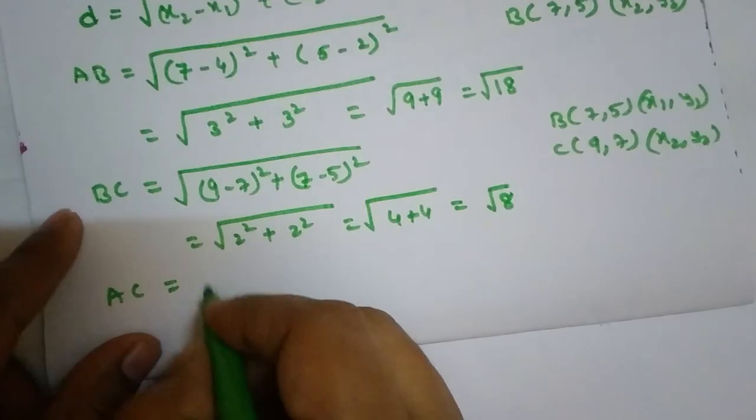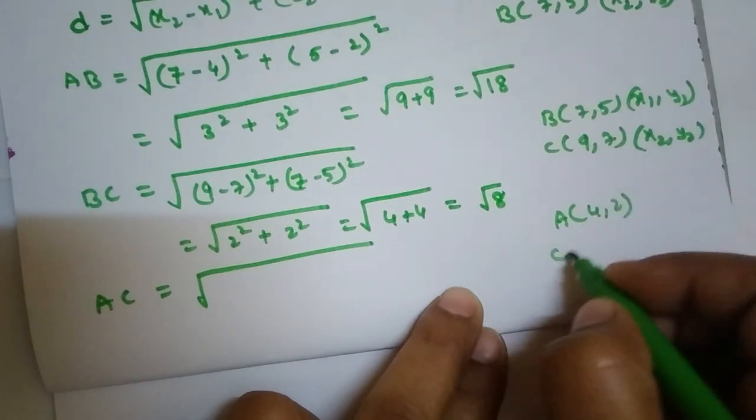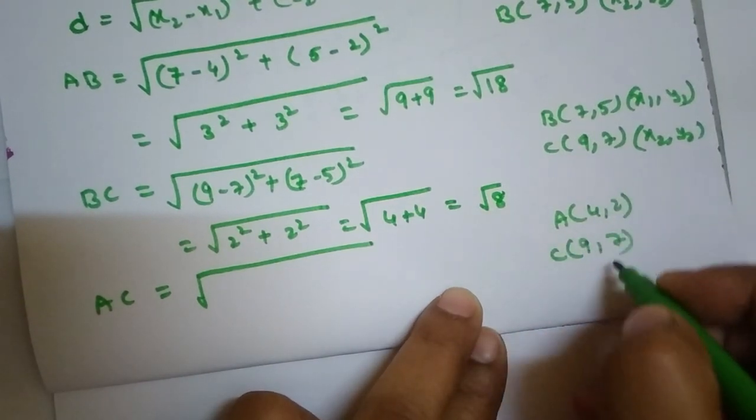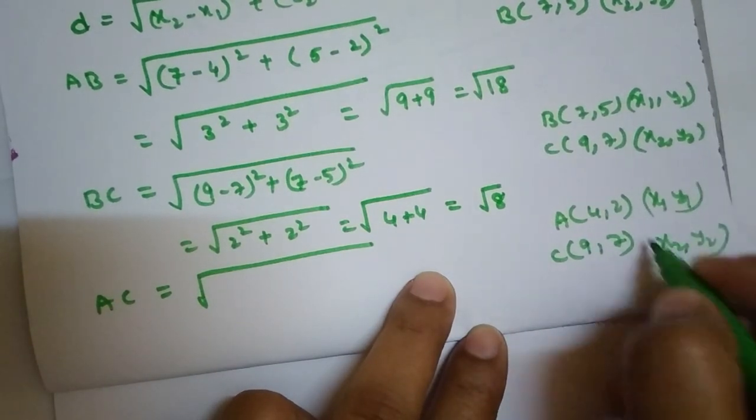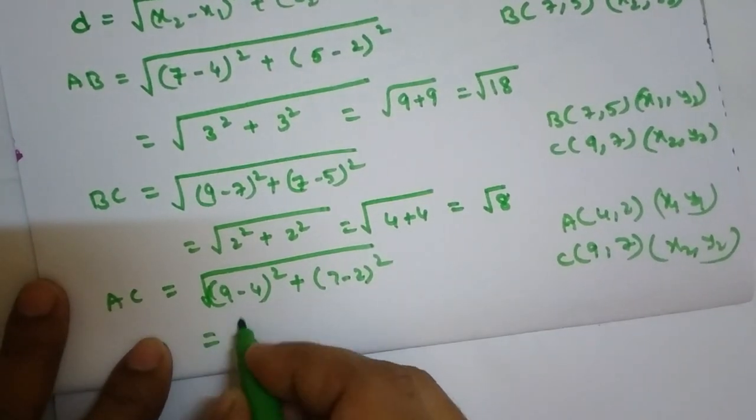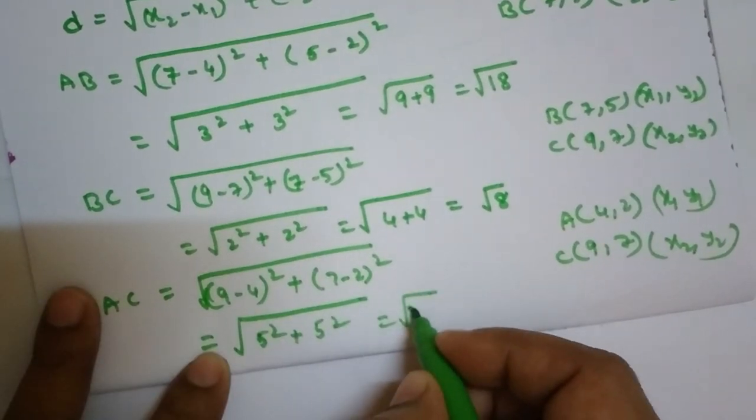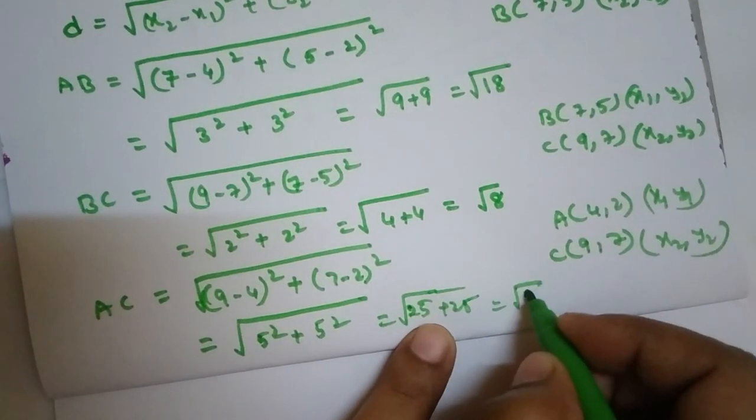Next AC. Square root of A(4,2), C(9,7). x1, y1, x2, y2. (9 minus 4) whole square, (7 minus 2) whole square, equals root 25 plus 25, equals root 50.